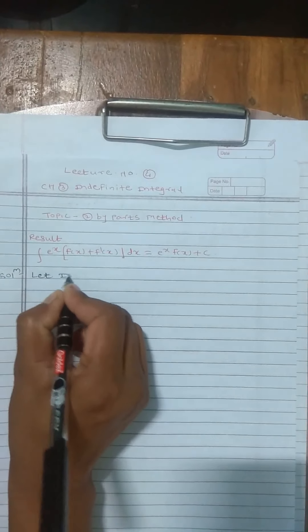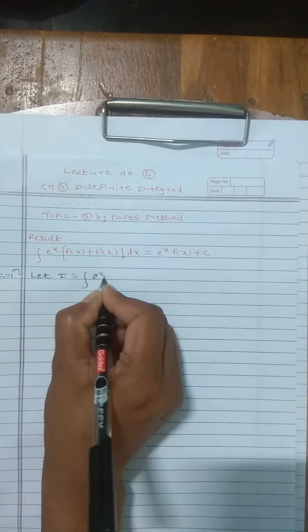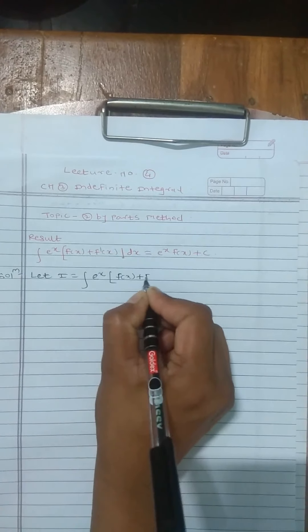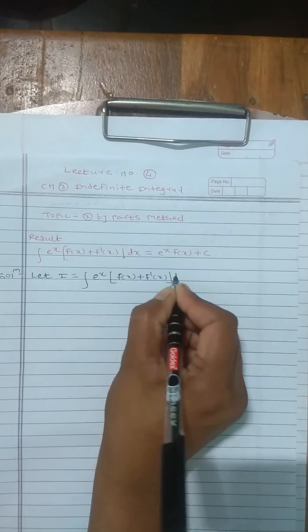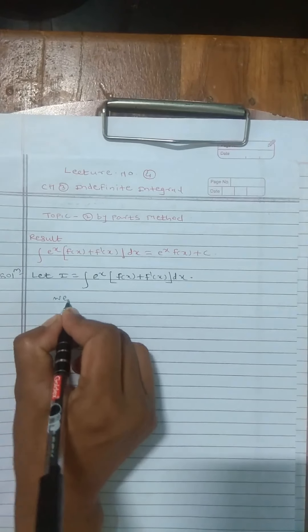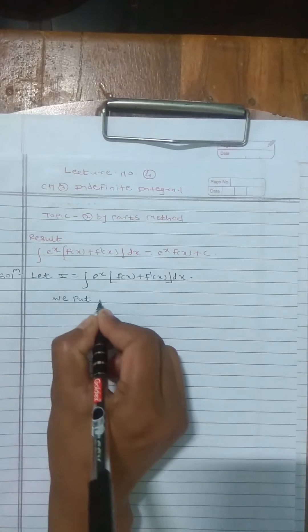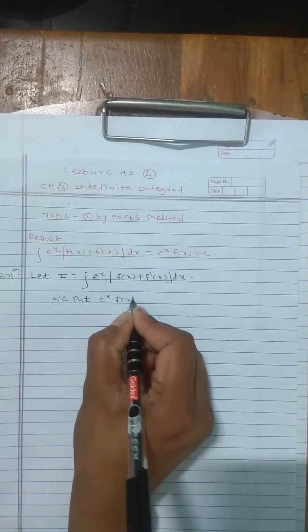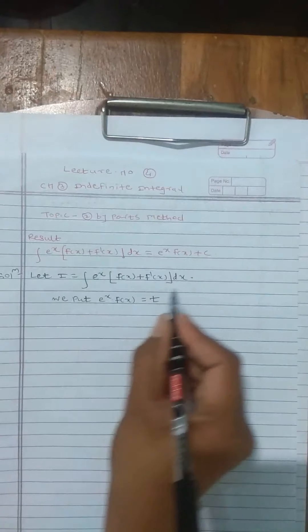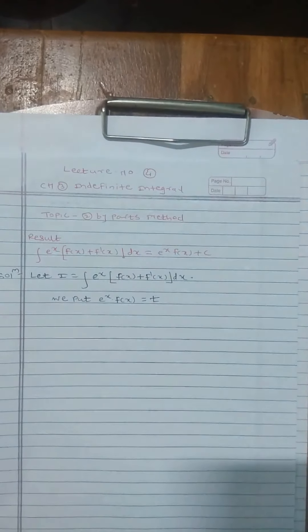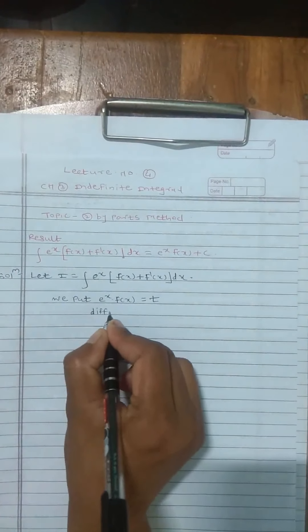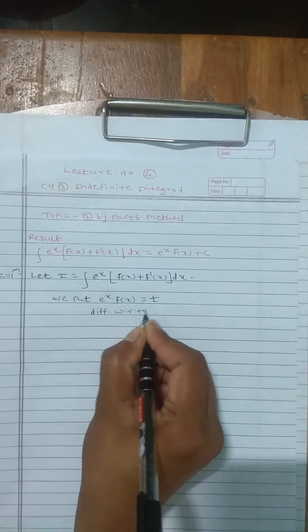Let I equal to the integral of e^x [f(x) + f'(x)] dx. We put e^x · f(x) equal to t. Now differentiate the above equation with respect to x.